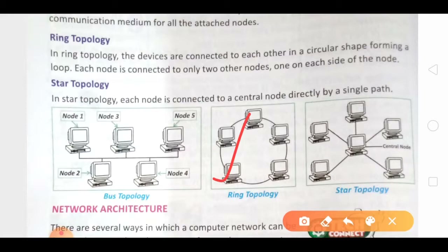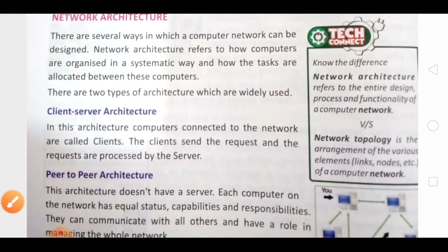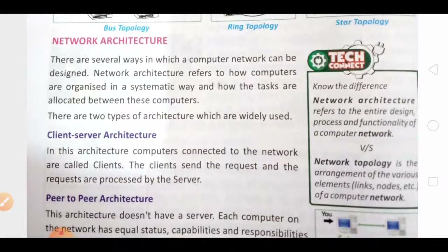In ring topology, every system is connected with two other systems on both sides, and data can be sent from one system directly to two systems. The next topology is star topology. As you can see in the figure, it is in the form of a star. In star topology, the hub or server is situated in the middle position and other computers are connected to it. When you try to send data from one computer to another, the data is first sent to the server, and then the server passes the data to the destination system. Topology is, in short, the geographical or geometrical arrangement of computers.